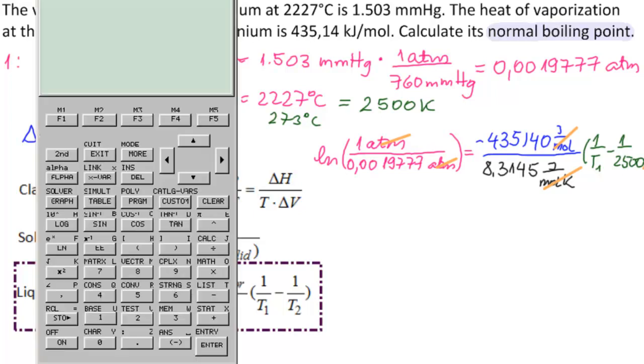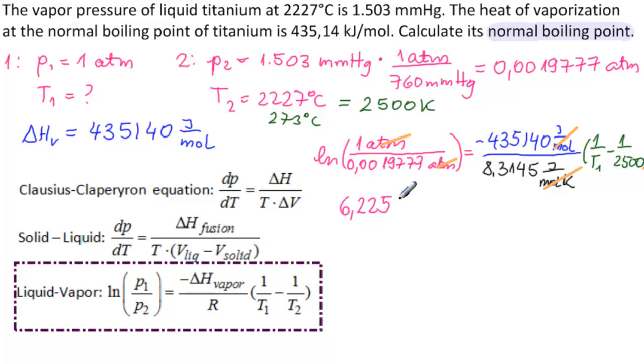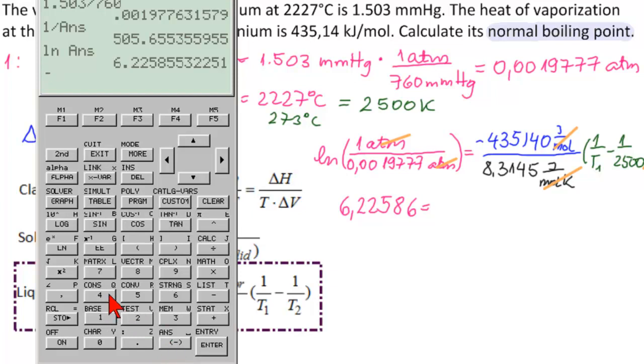So let's start to calculate. We have 1 divided by 0.0019777, which equals 505. And we need ln of that, so ln of 505, and we get 6.22586.